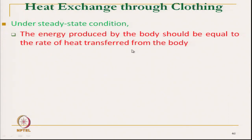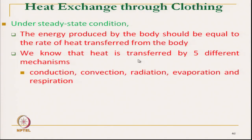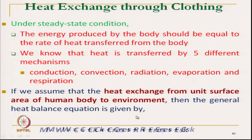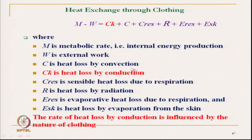Under steady state conditions — although we hardly reach steady state — the energy produced by the body should equal the rate of heat transferred from the body. There are 5 mechanisms: conduction, convection, radiation, evaporation, and respiration. The general heat balance equation per unit surface area of body covers all these principles. M is the metabolic rate produced by the body, W is the external work lost. M minus W is the net heat inside the body that must come out.